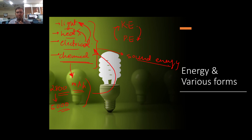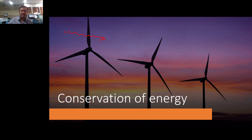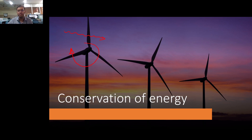If you sum up all the final forms of energy, the total value will be the same as the value of the initial form of energy. Take wind power as an example. You have your turbine with air moving through it — you have kinetic energy of the air, pressure energy, and thermal energy. As the air passes through the turbine, the pressure slightly drops and the kinetic energy slightly drops. This kinetic energy is being used to spin up these huge giant wind turbines.